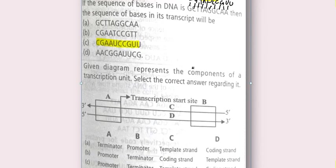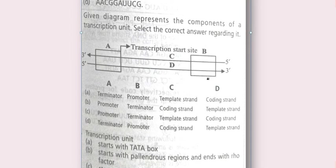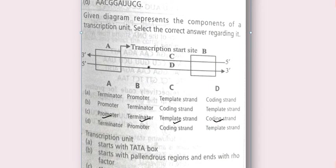Next question: the given diagram represents the components of a transcription unit — select the correct answer. A is the promoter, B is the terminator, C is the template strand, and D is the coding strand. The 3'-5' strand is the template strand, the 5'-3' strand is the coding strand, and the promoter is present at the 5' end of the coding strand.